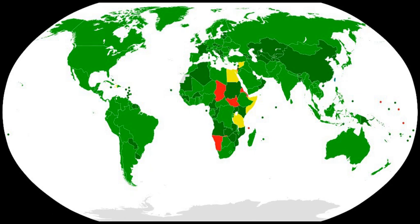An additional five states have signed the BWC but have yet to ratify the treaty. The scope of the BWC's prohibition is defined in Article I, the so-called general purpose criterion. This includes all microbial and other biological agents or toxins and their means of delivery, with exceptions for medical and defensive purposes in small quantities.